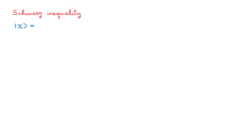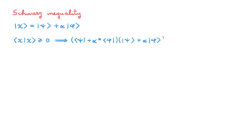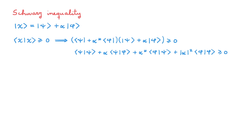To prove the Heisenberg uncertainty principle, we need a number of intermediate results, and we start with the Schwarz inequality. Consider state chi, given by the linear superposition of state psi and another state alpha phi. Using the positivity property of the scalar product, we know that the bracket of chi with itself is larger than or equal to zero. Plugging in the definition of chi and multiplying through, we get four terms. Feel free to pause here to cross-check this — it should be clear after a moment.